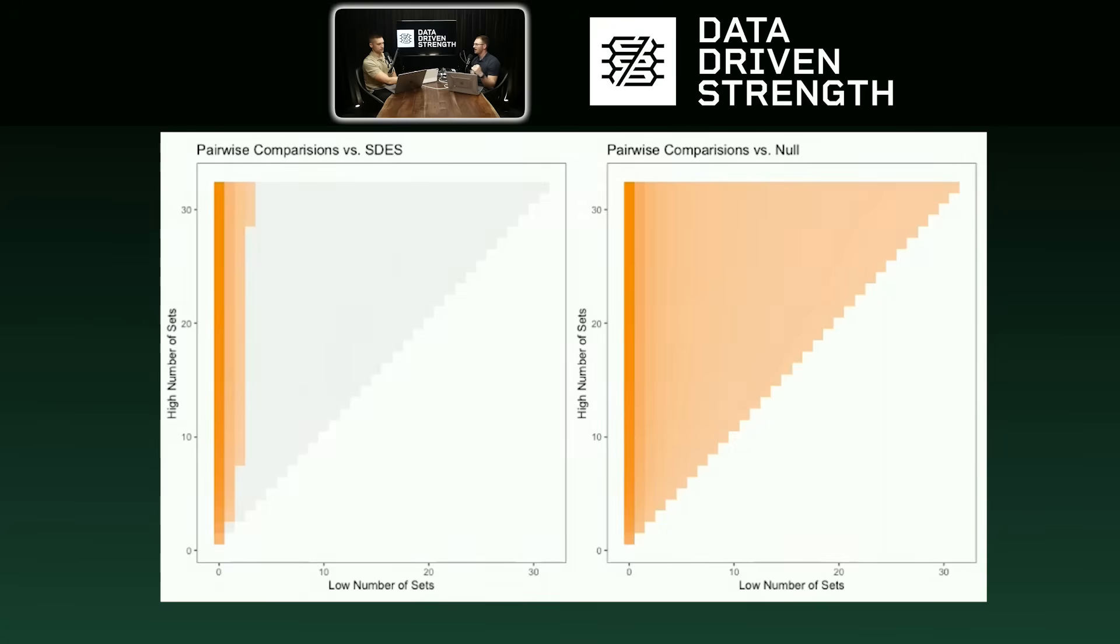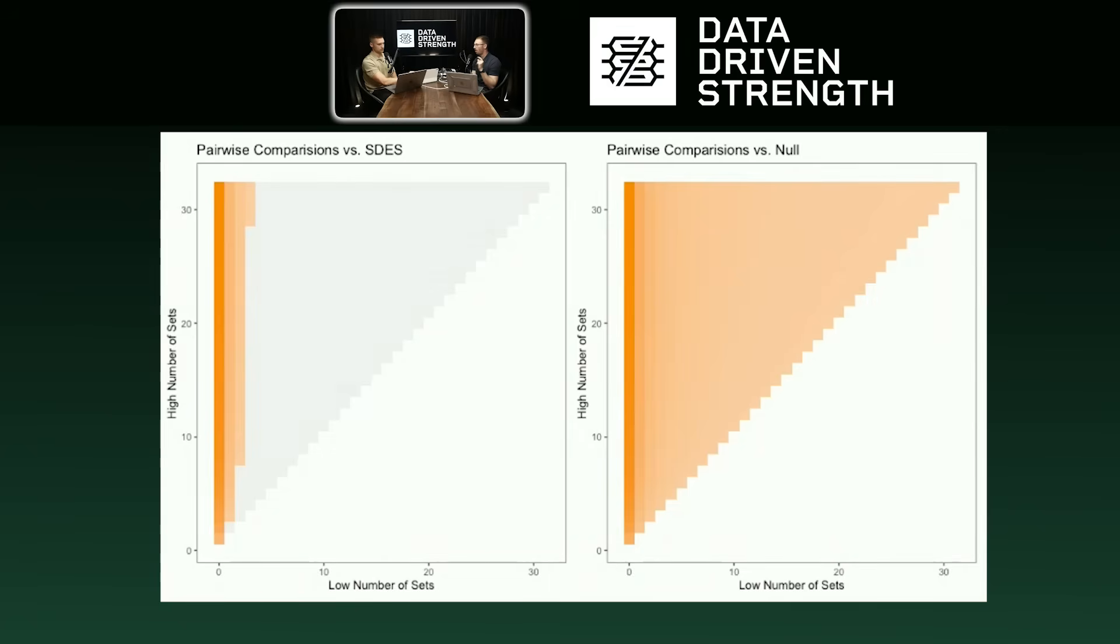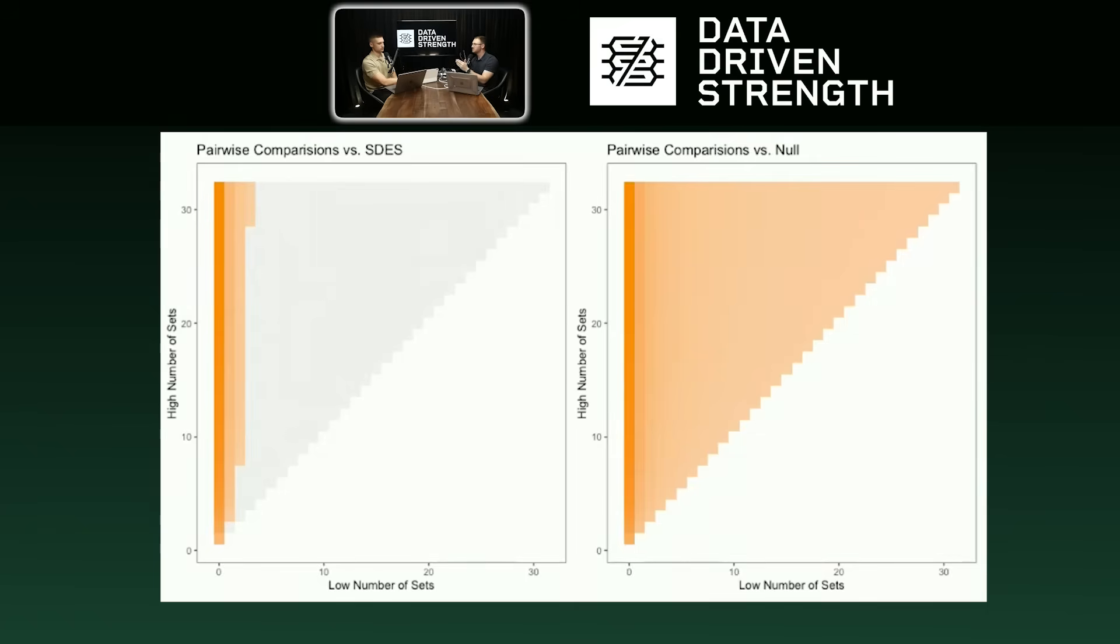However, when you flip over to the comparisons versus a null point estimate, or in this case, let's compare the differences between the two volumes versus zero, the differences are small. They're not exceeding our smallest detectable effect size, but they're very precise. We have a ton of data for strength and we have a best fit model that fits pretty darn well. The precision of the interval width on those estimates in the main meta-regression table are really, really narrow. So when we compare all of those differences against zero, every single one of them exceeds zero. So the effect may be very, very small.